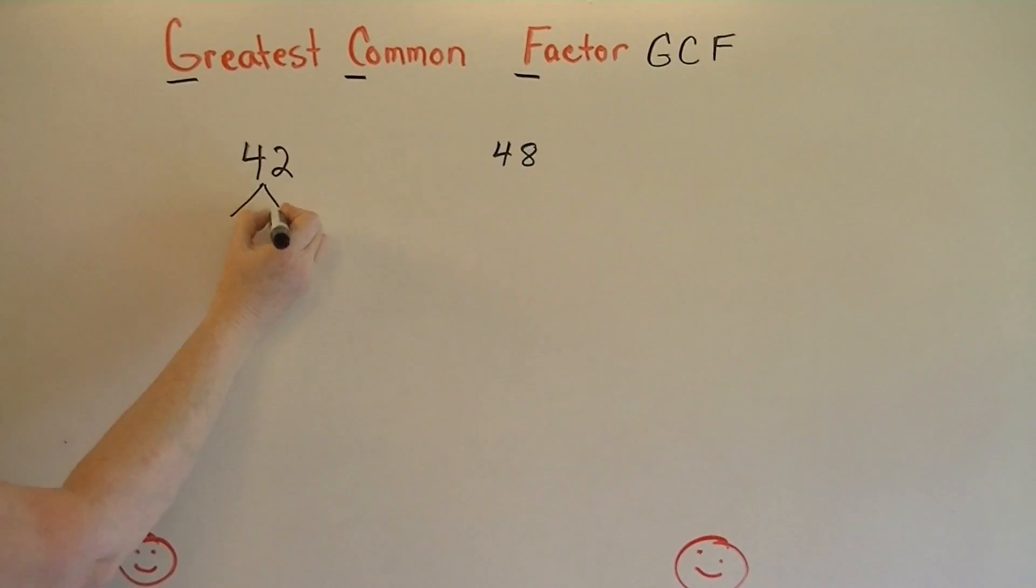So I'm going to factor 42 into its prime numbers. I think of 6 and 7. And 7 is prime, so I'm going to circle it. I'm done with that one.